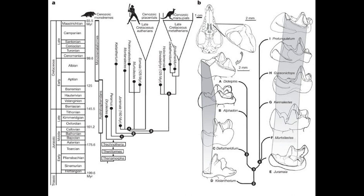Thus, even though Dawkins and Wong used Jeremiah to date the split between placentals and marsupials, in reality the split would have occurred probably at least a few million years prior to that. One estimate puts that split about 178 million years ago. We'll discuss using fossils in molecular clocks when we come to the velvet worm's tail, so stay tuned.